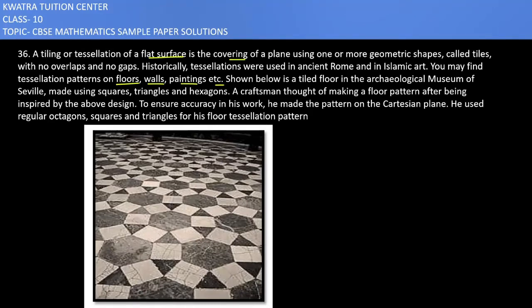Shown below is a tile floor in the Archaeological Museum of Seville made using squares, triangles and hexagons. A craftsman thought of making a floor pattern after being inspired by the above design. To ensure accuracy in his work, he made the pattern on the Cartesian plane. He used regular octagons, squares and triangles for his floor tessellation pattern.